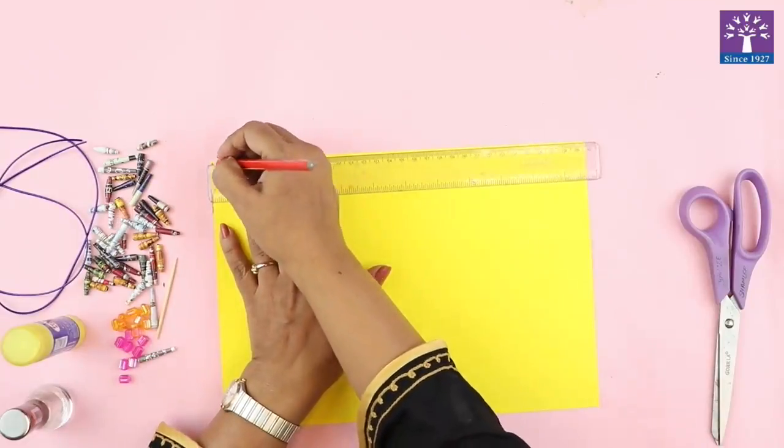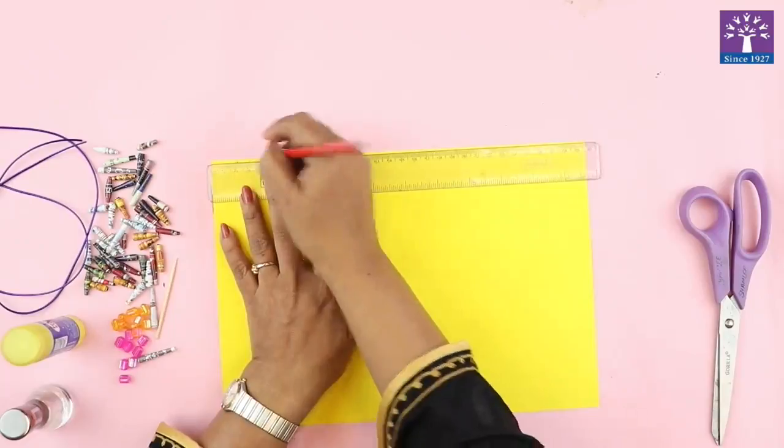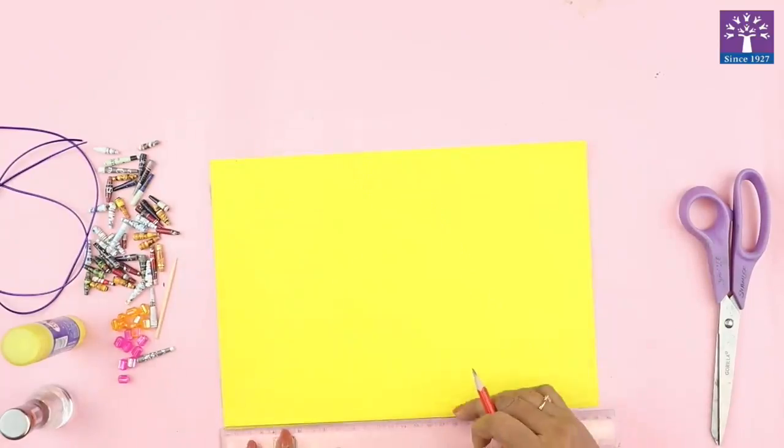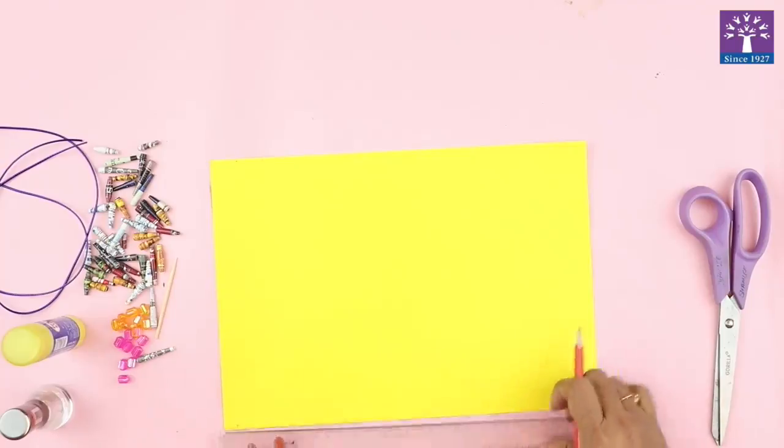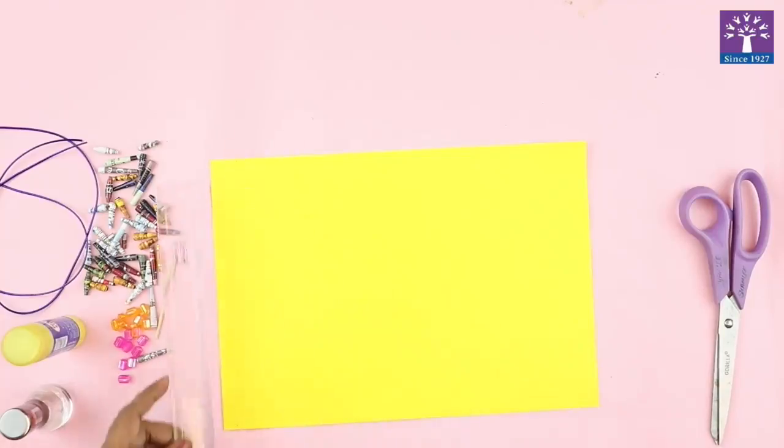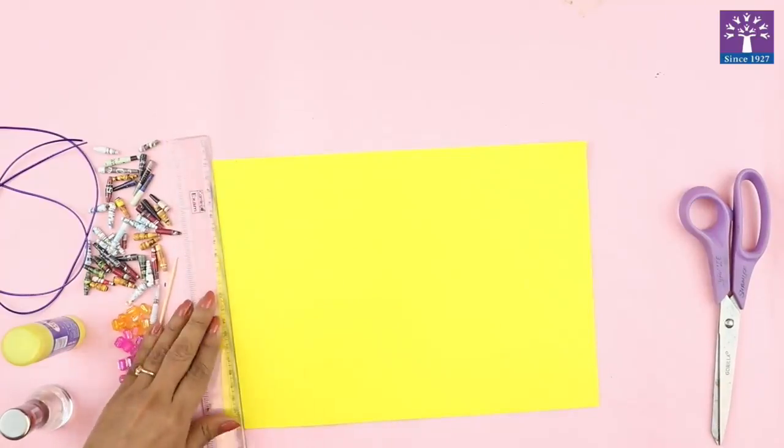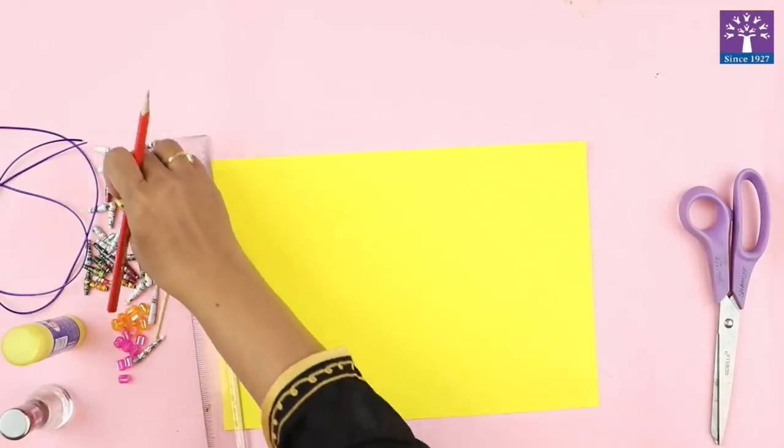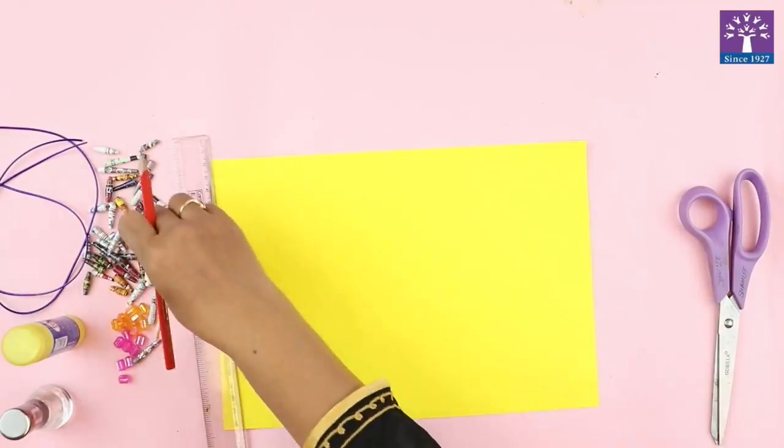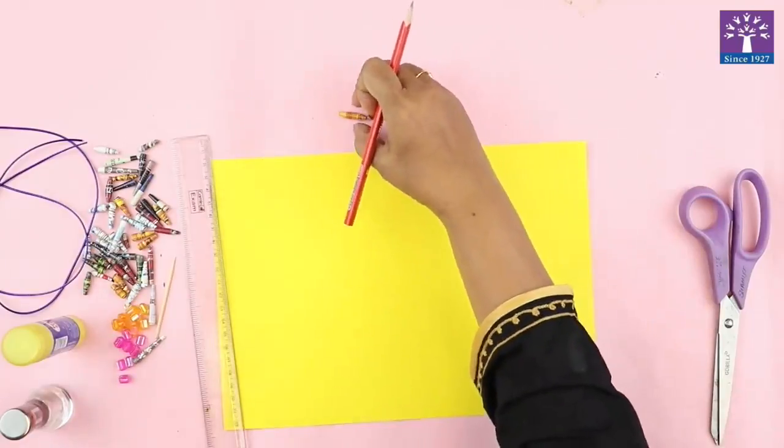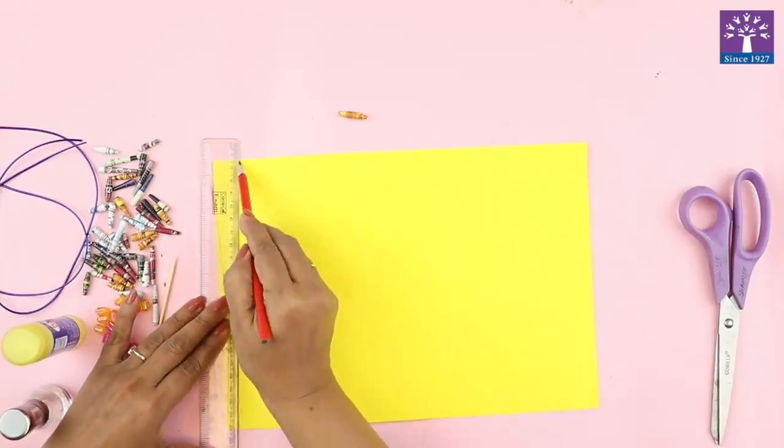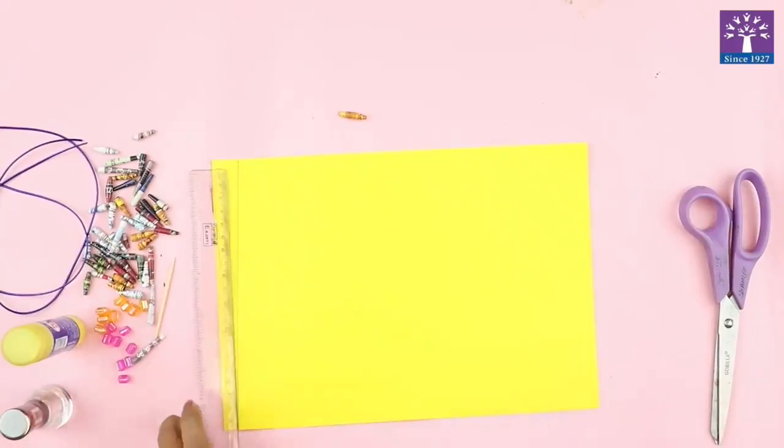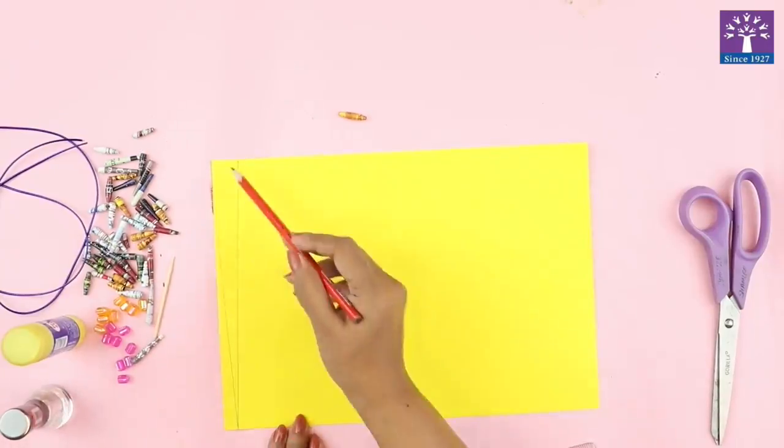We will mark 2 cm. At the bottom we will mark 1 cm. So this 1 cm is for this first line. So first we will learn how to make this bead. So basically it is a V shape pattern.